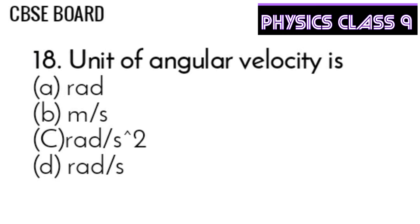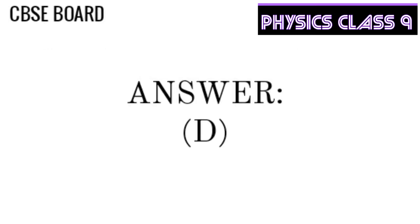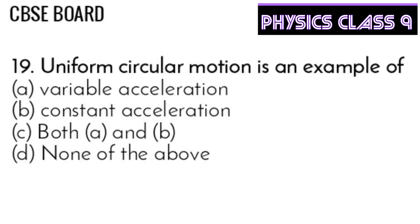Question 18: The unit of angular velocity — the answer is D. Question 19: Uniform circular motion is an example of variable acceleration, constant acceleration, both A and B, or none of these. The answer is B — constant acceleration.